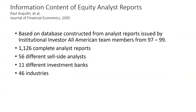Moving on to 2005, Journal of Financial Economics — one of our top three research journals along with the Review of Financial Studies and the Journal of Finance. This article is based on a database of analyst reports issued by Institutional Investor All-American team members from 1997 to 1999 — top-performing analysts over that period. It includes 1,126 complete analyst reports, 56 different sell-side analysts from 11 different investment banks, and 46 industries. Up to this date, and perhaps still today, most people consider this the holy grail of research on sell-side equity analysts. It's a very broad sample and they did a very thorough job.